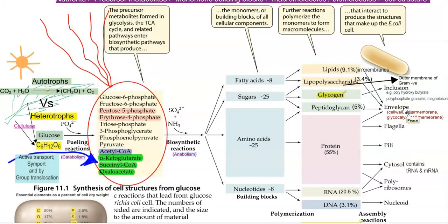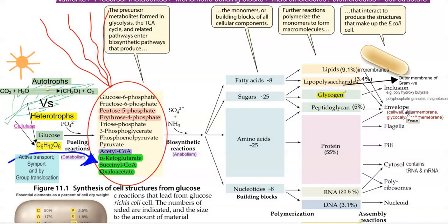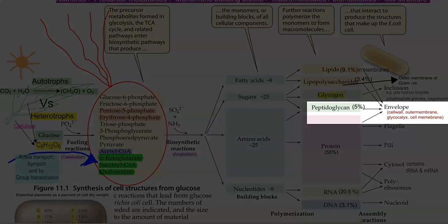These macromolecules interact among themselves to produce the various structures that make up a bacteria. For example, lipids and lipopolysaccharides are involved in the making of the membranes, and especially lipopolysaccharides constitute the outer membrane of gram-negative bacteria. Glycogen is involved as an inclusion substance inside the cell — constituting polyhydroxybutyrate, polyphosphate granules, and even magnetosomes — serving as an important reserved source of carbon inside the cells. The stored form of carbon and nitrogen comes under the category of inclusion bodies. The next one is the peptidoglycan, which makes up the cell envelope.